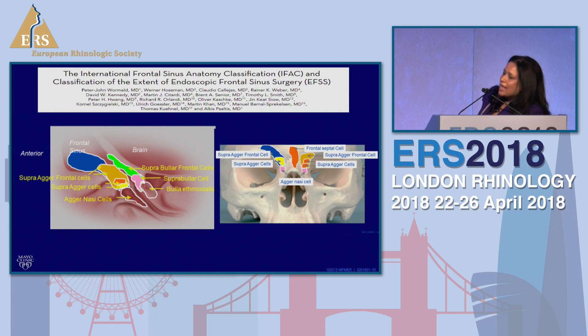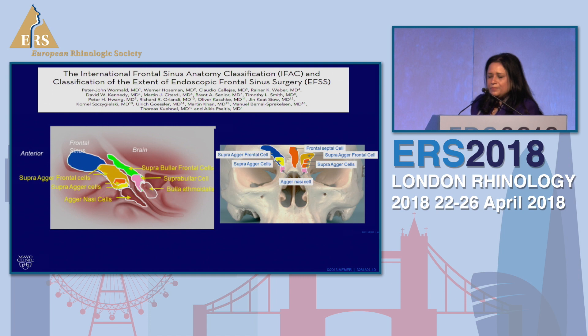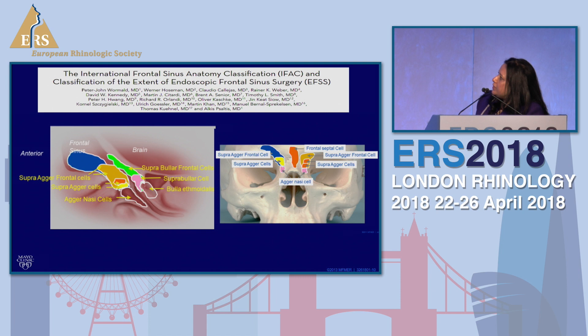The nomenclature has been recently modified — this is what I use to teach residents now, from a recent paper by Wormald's group with Peter Wong as co-author. It simplifies things: you have an agger nasi cell anteriorly, and cells on top are called supraagger cells. If they pneumatize above the frontal ostium into the frontal sinus itself, they're called supraagger frontal cells. Likewise with the bulla — a suprabullar cell pneumatizing into the frontal sinus is a suprabullar frontal cell. There's also the frontal septal cell, and it's important to recognize how that affects the drainage pathway.